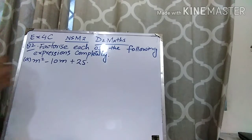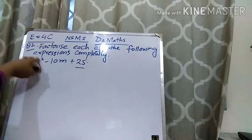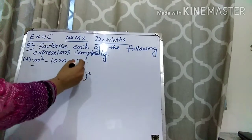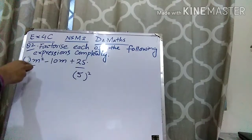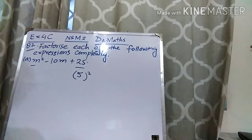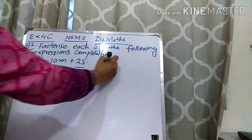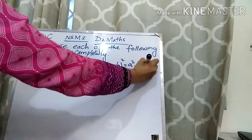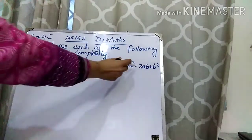If you find that the first and the last term are perfect squares, you can use the formula. Here you can see that this is a perfect square, and when you take the square of 5, you will get 25. If there is a minus sign in the middle, you can use the formula: A minus B whole square equals A squared minus 2AB plus B squared.